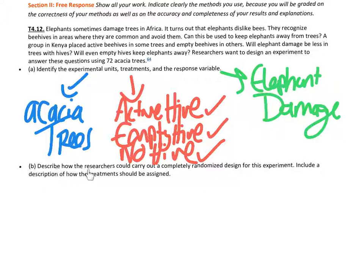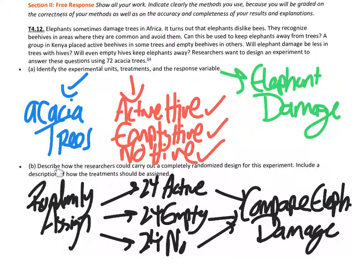Part B: Describe how the researchers could carry out a completely randomized design for this experiment, including a description of how the treatments should be assigned. The first thing you want to do is come up with a way to randomly assign. If you use a random number generator, you would randomly assign the numbers 01 to 72 to each of the acacia trees, then use a random number generator to pick 24 two-digit numbers in this range, ignoring repeats.